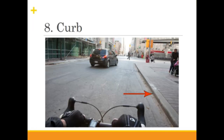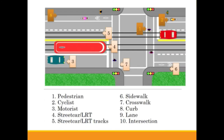The curb is a concrete raised edge where the road ends and the sidewalk begins. There can also be a green space for trees, benches, garbage and recycling bins, or other street furniture, as it is called. The curb boundary can be seen noted here at number eight.